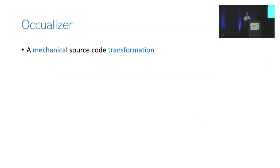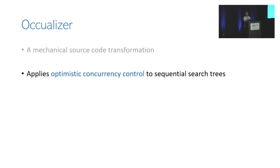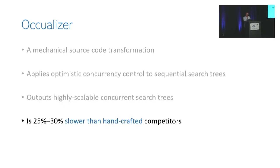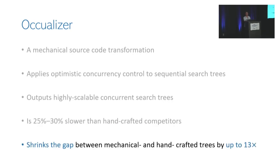In conclusion, OCCUalyzer is a mechanical transformation that applies optimistic concurrency control to sequential search trees, outputting highly scalable concurrent search trees. Even though they are 25 to 30% slower than handcrafted competitors, they show much better results than any other mechanical transformation.